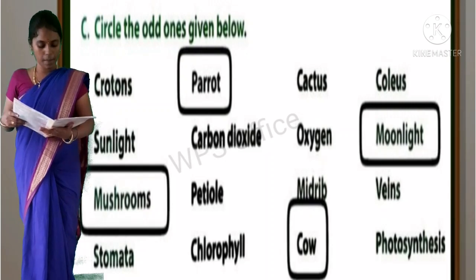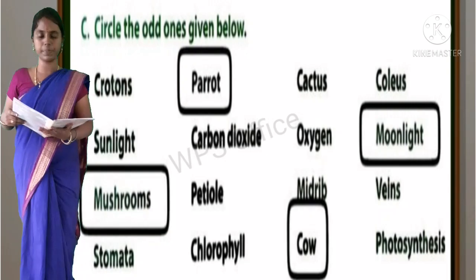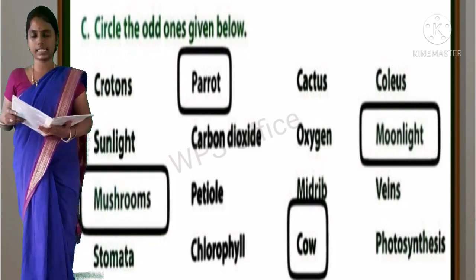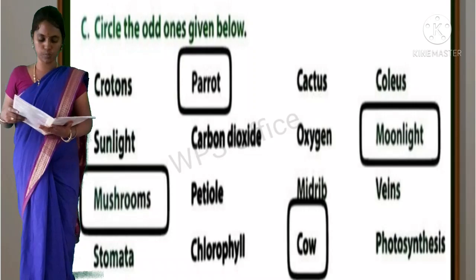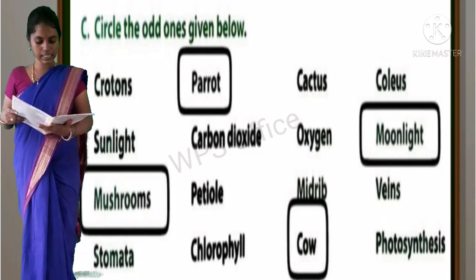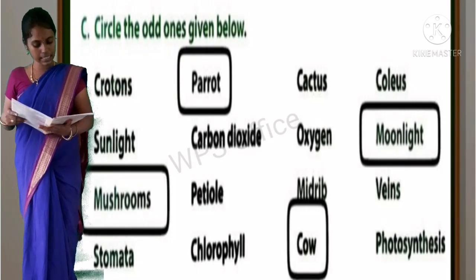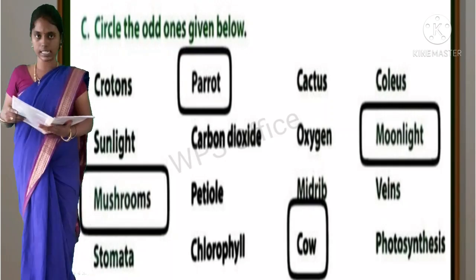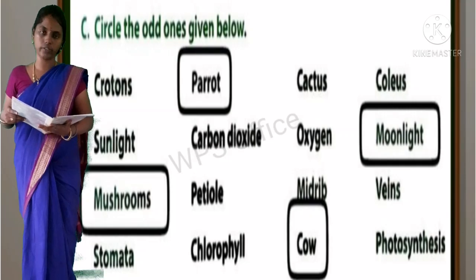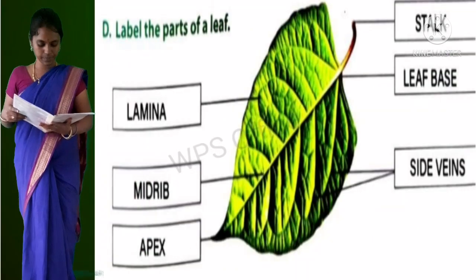Third one: Mushrooms, Petiole, Midrib, Veins. Mushroom is the odd one. Fourth one: Stomata, Chlorophyll, Cow, Photosynthesis. Cow is the odd one. Now section D.